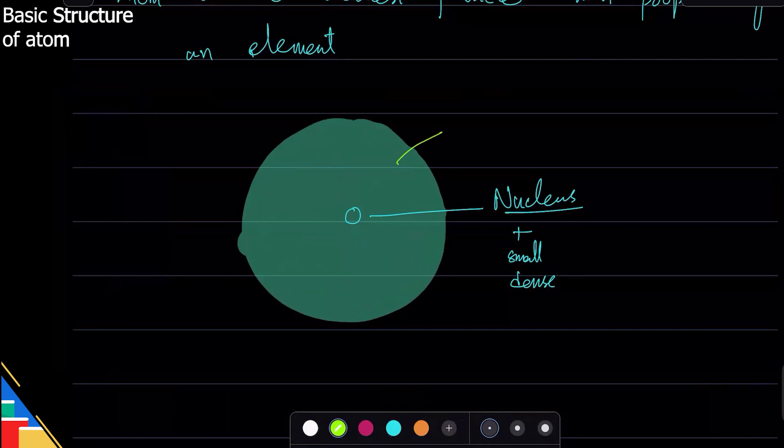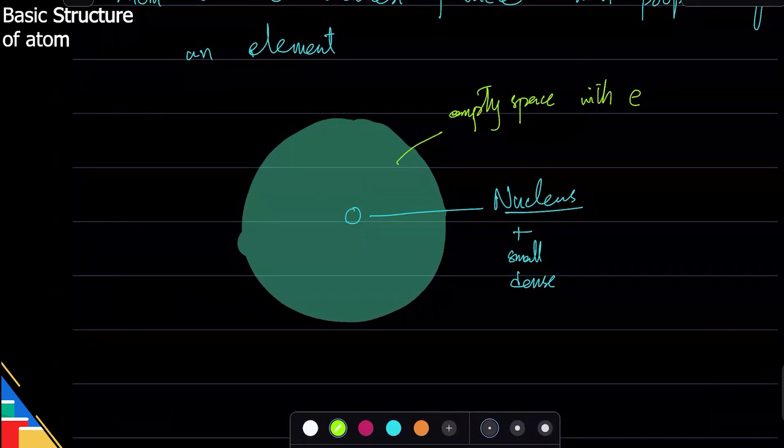Empty space with electrons. So that's the thing: most of the atom is empty, but there are electrons in there that are moving around. And because electrons are really small, they don't take much space.